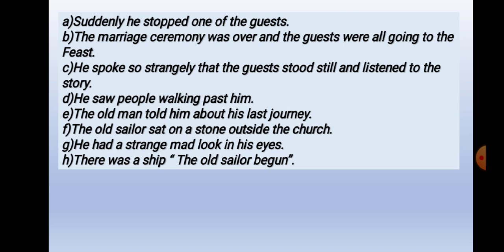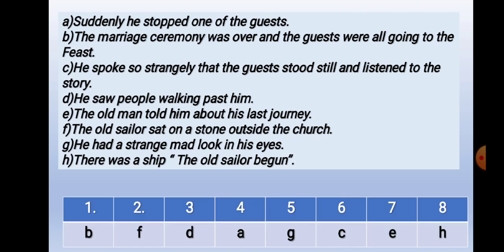Now the third one. A: Suddenly he stopped one of the guests. B: The marriage ceremony was over and the guests were all going to the feast. C: He spoke so strangely that the guests stood still and listened to the story. D: He saw people walking past him. E: The old man told him about his last journey. F: The old sailor sat on a stone outside the church. G: He had a strange mad look in his eyes. H: There was a ship. The old sailor began. When you practice, write the answer first, then check with the correct answer. The right answer is: B, F, D, A, G, C, E, H.